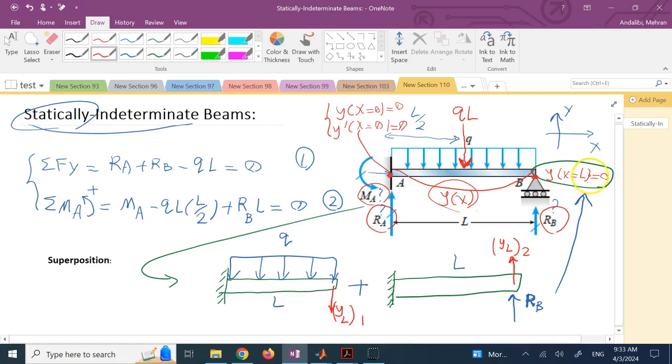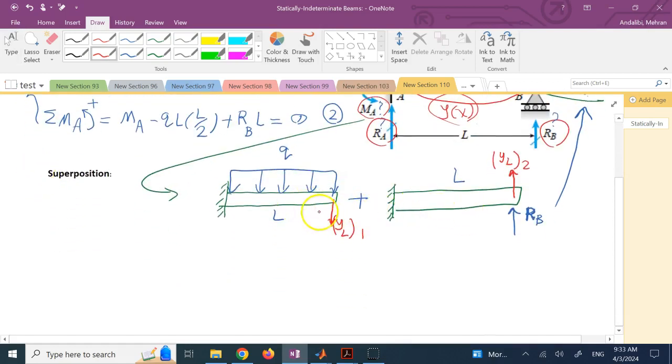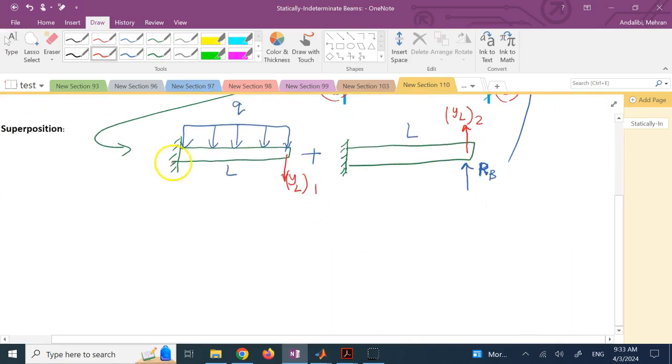You might say now I have to solve for two Y of X functions, one for this load, one for that load. But for most of these types of loadings, the Y at specific points—in this case the maximum Y—is available in diagrams at the end of your solid mechanics book. If you look at your solid mechanics book, it says that if you have a cantilevered beam with uniform loading, the Y at the end, YL number 1, is already calculated for you. That equals Q times L to the 4th over 8 times E times I, where E is the Young's modulus and I is the cross-section moment of inertia of the beam about the neutral axis.